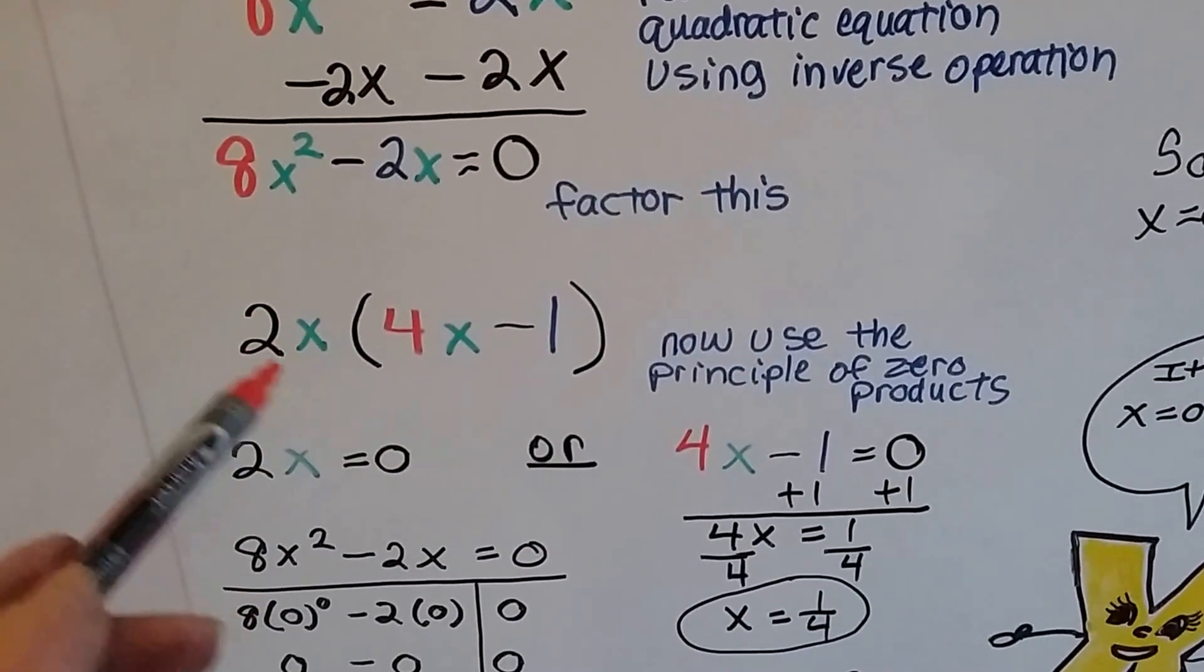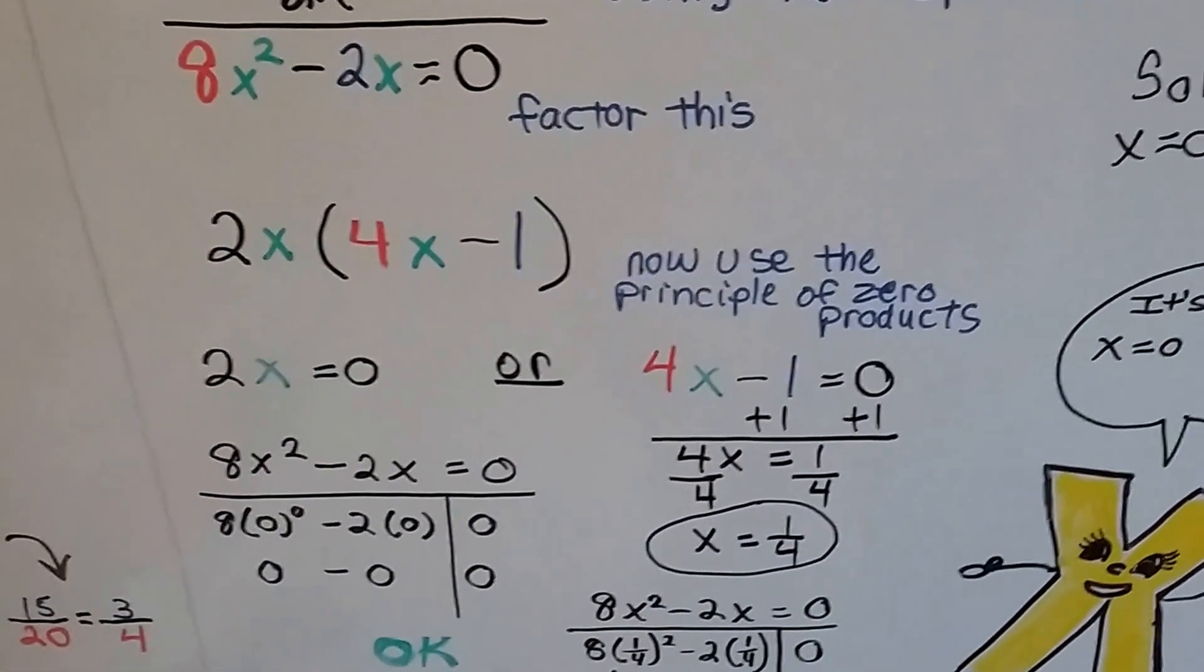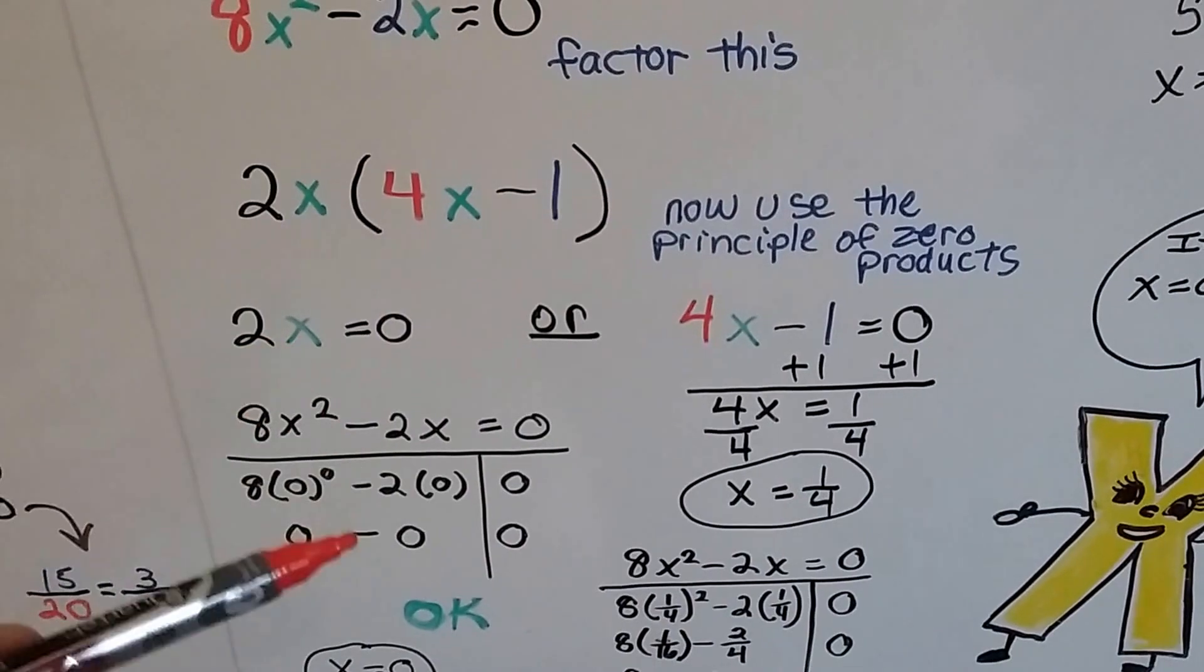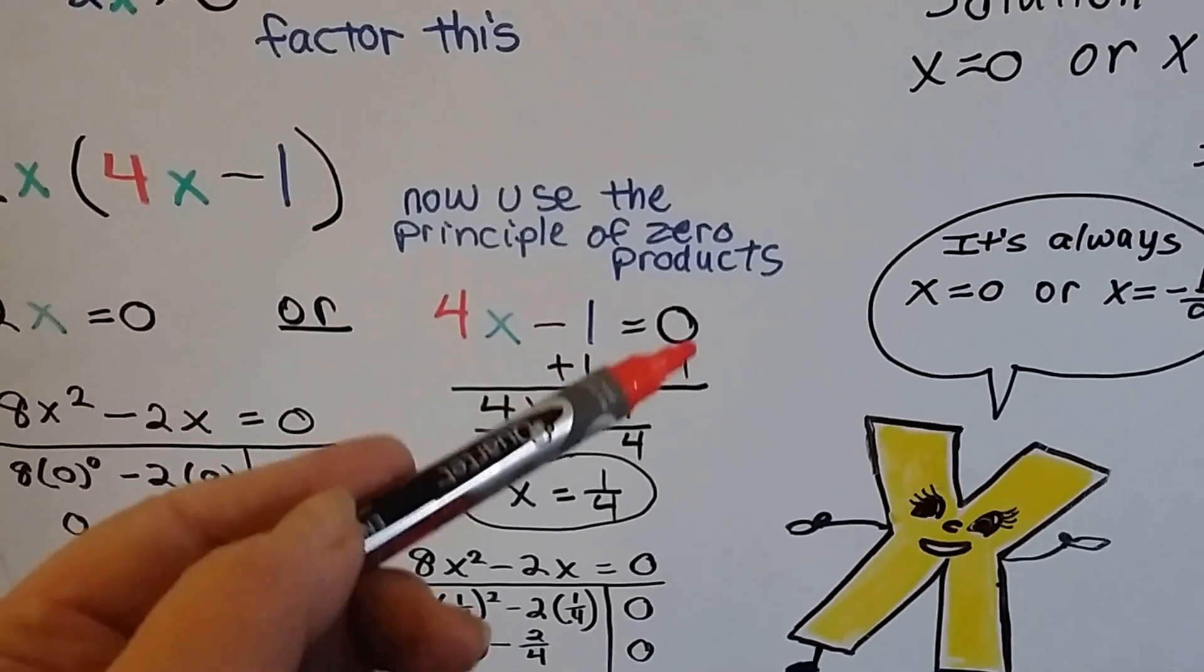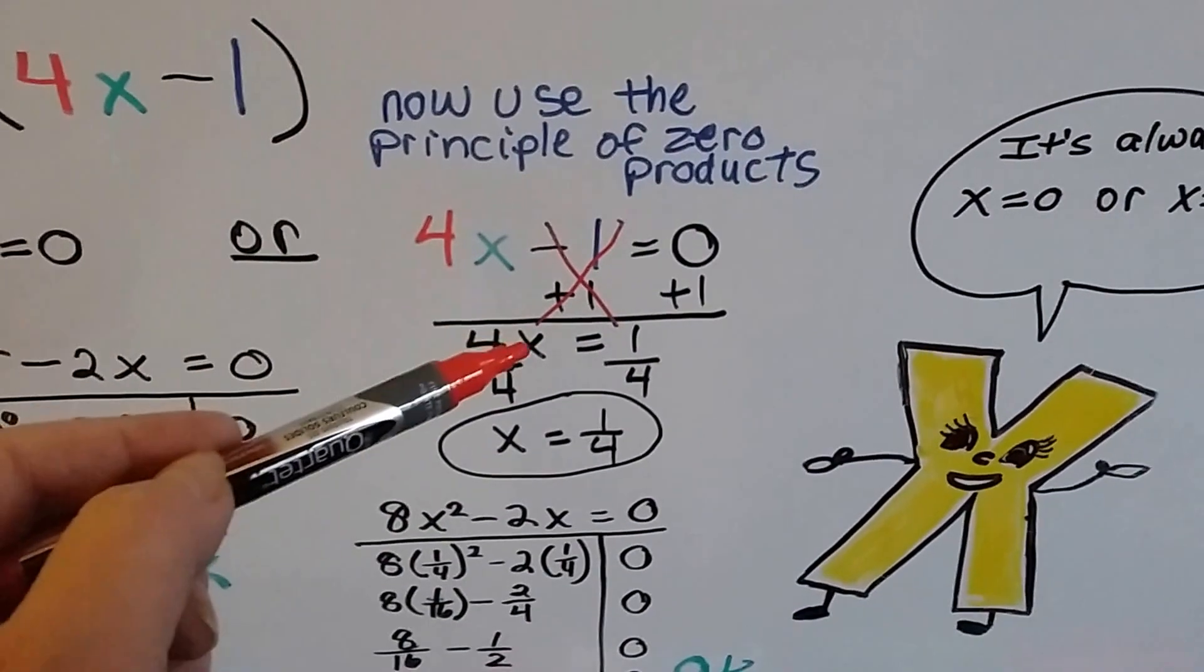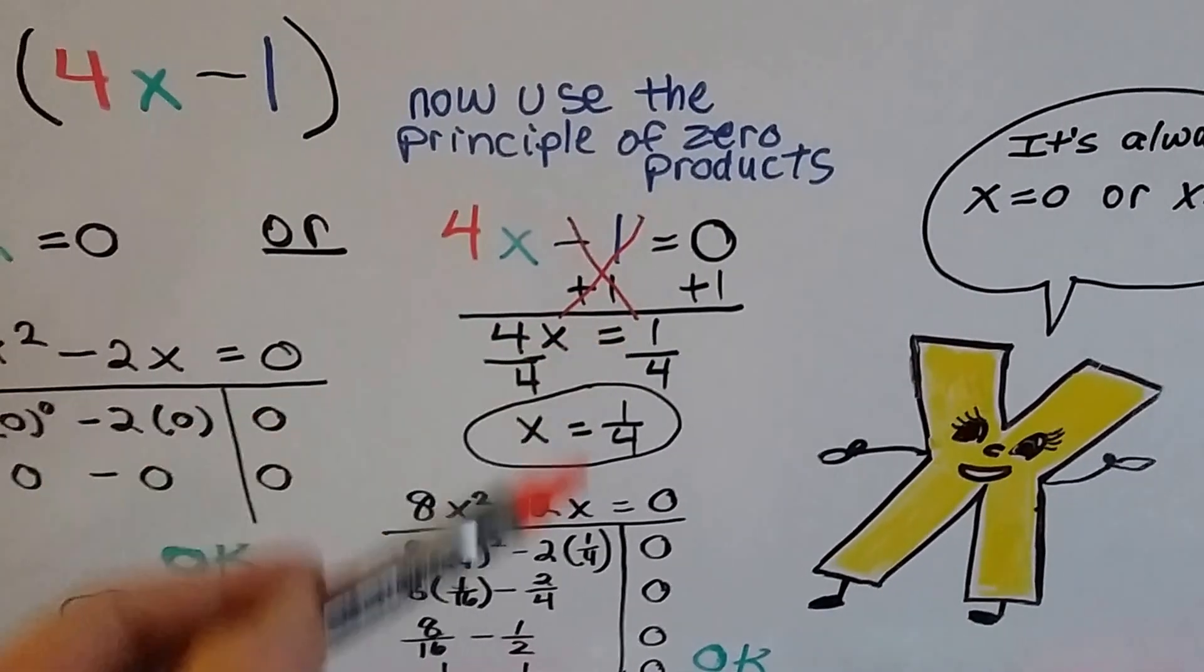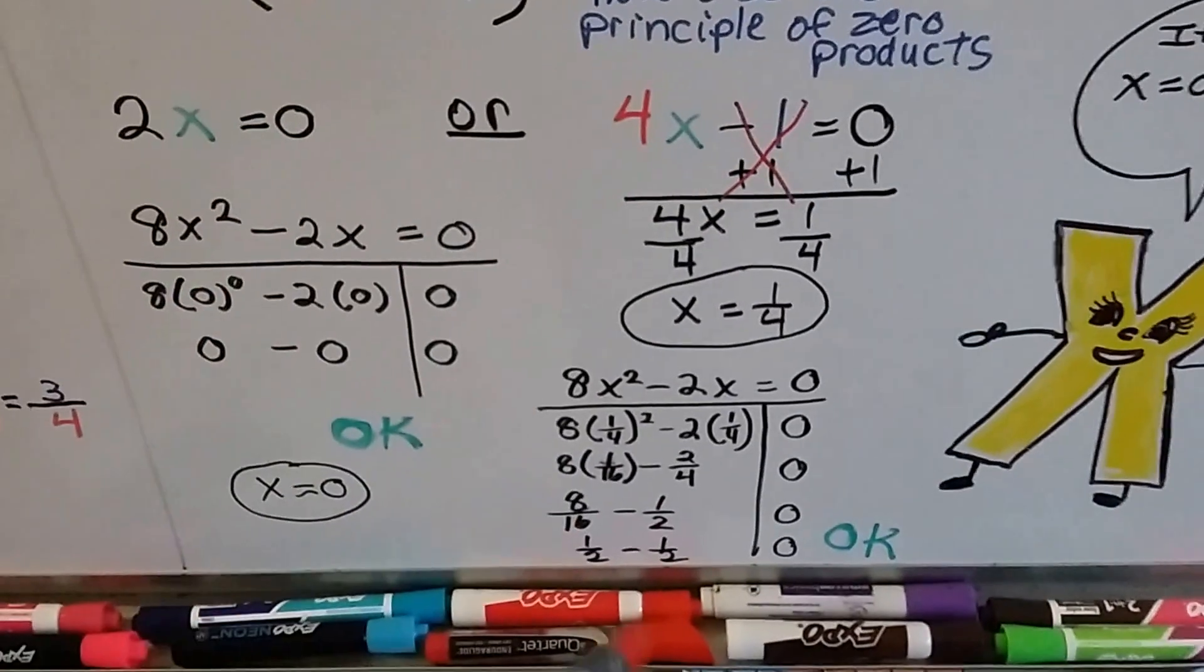So now we're going to set this side to equal zero, the 2x, and the 4x minus 1 to equal zero using the principle of zero products. This has to be zero for the answer to be zero, so x is zero. And on this side, we're going to add 1 to each side of the equal sign to get rid of this and create a zero pair. So now we've got 4x equals 1. We divide both sides by the coefficient 4. So now we have x equals 1 fourth. And because we started with a negative, we have a positive 1 fourth.